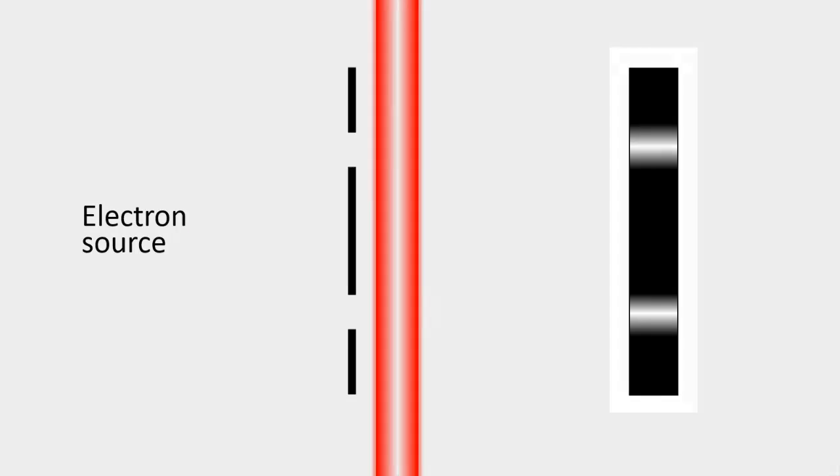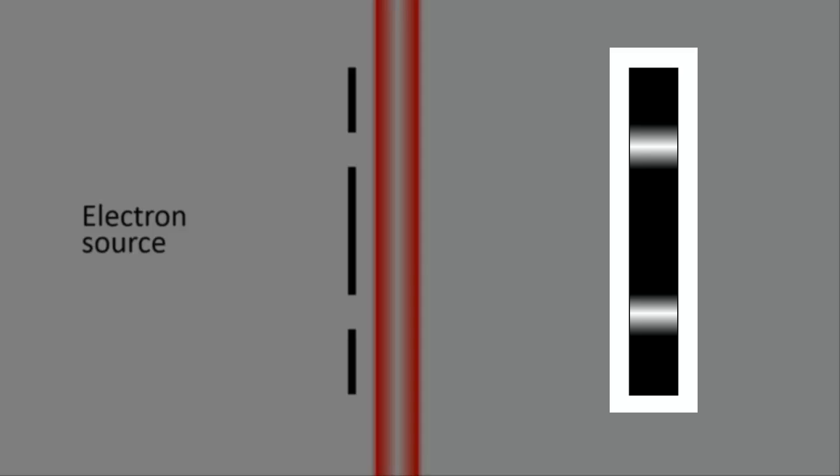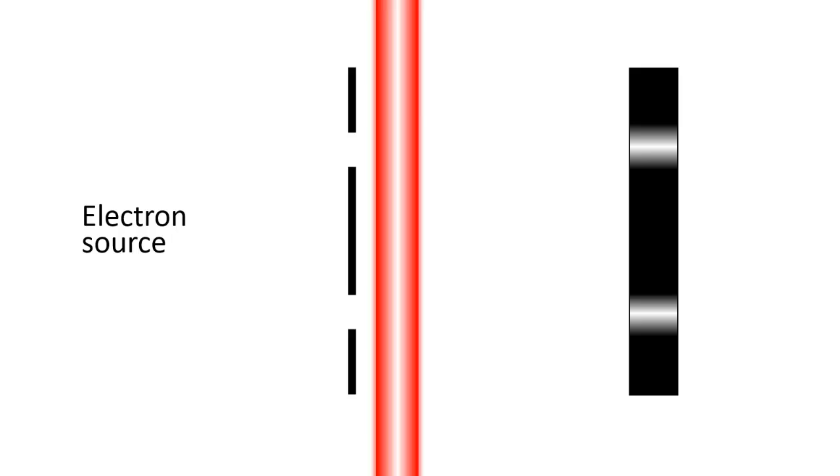Furthermore, the interference pattern that we saw before we introduced the laser is now gone. Instead, the electrons are hitting positions directly behind each slit. Now all of a sudden the electrons are behaving like particles, not waves. So now we know that the electron travels through only one of the two slits, not both at the same time. If we see which slit the electron goes through, then we lose the interference pattern. If we want to see the interference pattern, then we've got to remove the device that allows us to determine which slit the electron goes through.